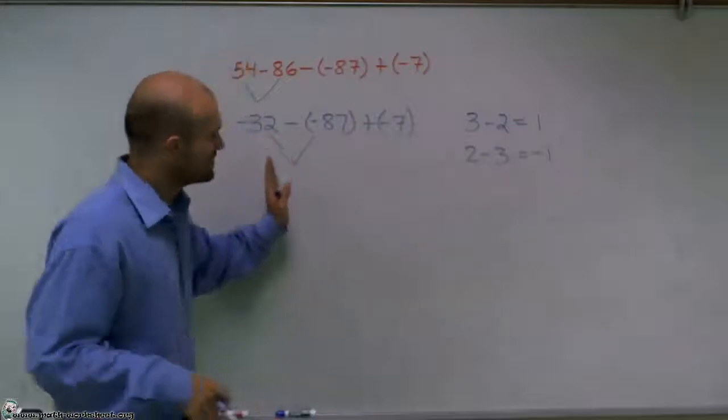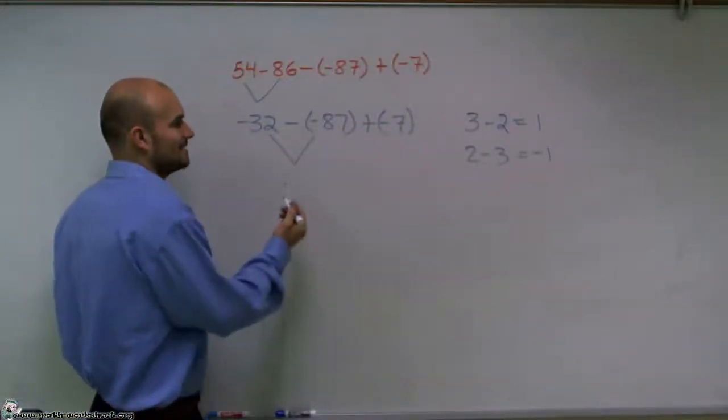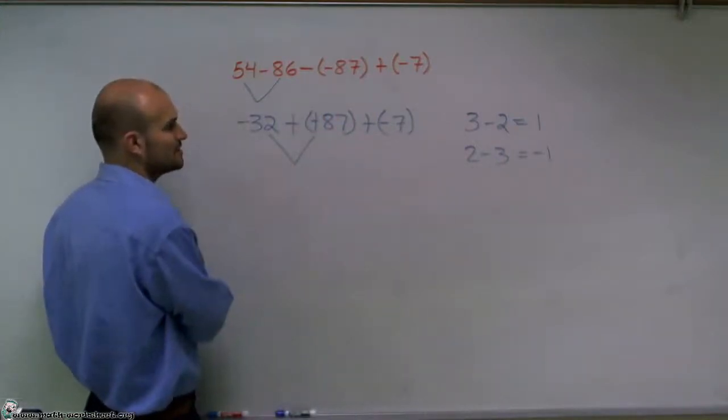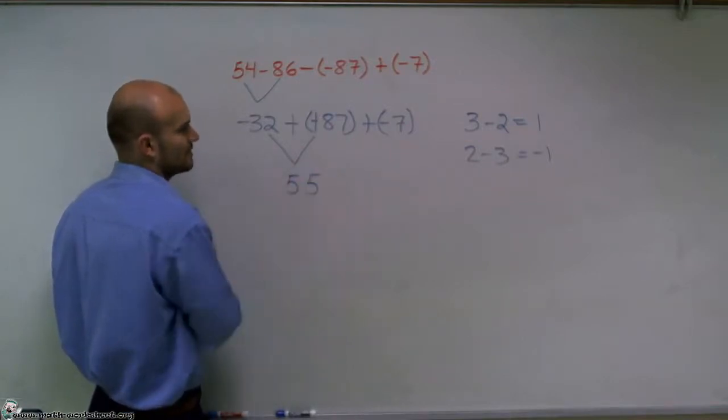So it's the same thing also in mathematics. If you have a double negative, that's the same thing as making that a positive. So now, a negative 32 plus 87 is going to give us 55.